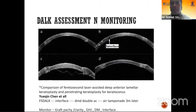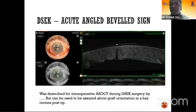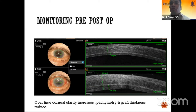In DALK or any other graft, you basically assess pachymetry, graft clarity, graft-host junction, Descemet membrane, and the interface. Here you can see there was a double-bubble AC form which resolved over time. The attachment of grafts in DSAEK shows an acute angle beveled sign at the edge of the graft — this can be used to assess orientation in a hazy cornea postoperatively. Monitoring grafts pre and post-op: on day one the graft is very thick due to longstanding edema and the storage medium, and over time it resolves with improved clarity and reduced graft thickness.